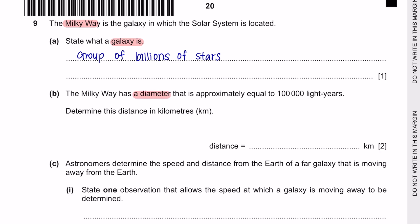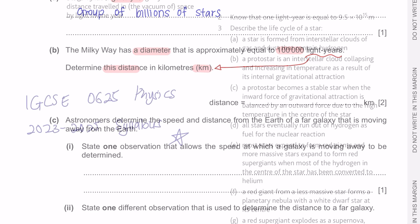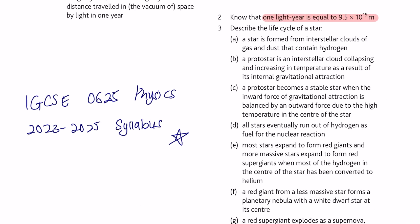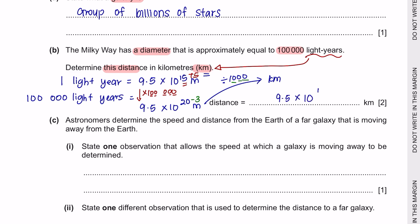Next question B: The Milky Way has a diameter approximately equal to 100,000 light years. Determine this distance in kilometers. Light years is a measurement of distance and we need a unit conversion from light years to kilometers. You must know that 1 light year is equal to 9.5 × 10¹⁵ meters. So 100,000 light years means 1 light year multiplied by 100,000 — that's adding 5 to the power, giving 9.5 × 10²⁰ meters. To convert to kilometers we divide by 1,000, subtracting 3 from the power, giving 9.5 × 10¹⁷ kilometers.